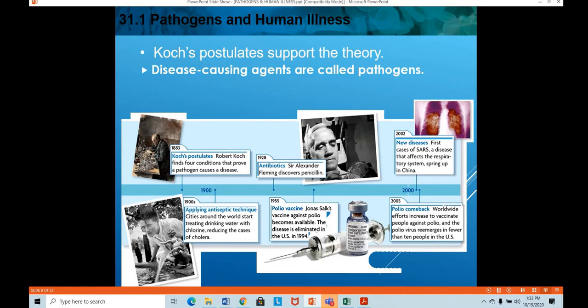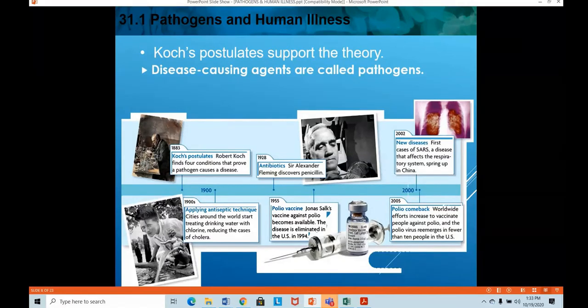Vaccines were eradicating most fatal diseases or diseases that cause serious malformations in the body. Then in 2002, new diseases started infecting people — like SARS, a respiratory disease also originating from China, similar to COVID-19. In 2005, polio re-emerged because people were not taking vaccines seriously, and worldwide efforts increased to vaccinate people; the polio virus re-emerged in fewer than 10 people in the U.S.